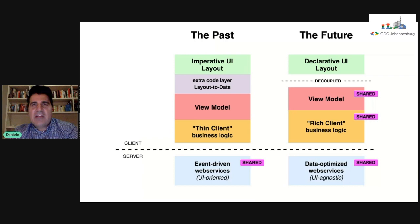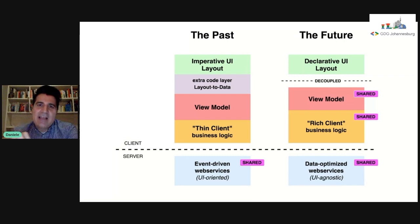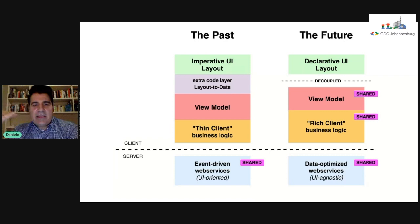In traditional Android development, whenever you make an XML layout and define components, you always need to define an ID for each component. If you want to apply data to these components, you need an extra layer where you associate the data to the ID and couple it to the XML layout components. This happens both in Android and in iOS — find-view-by-ID is exactly this layer of code. In the declarative UI layout, you don't have this at all; your components don't even have IDs.